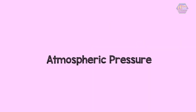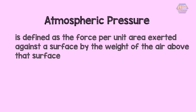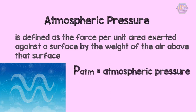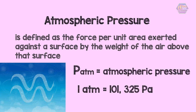Now let's discuss atmospheric pressure. Atmospheric pressure is defined as the force per unit area exerted against a surface by the weight of the air above that surface. Simply put, it is the pressure exerted by the air. The standard atmospheric pressure, denoted as atm, is equal to 101,325 pascals. Atmospheric pressure also acts in every direction, not only downward.